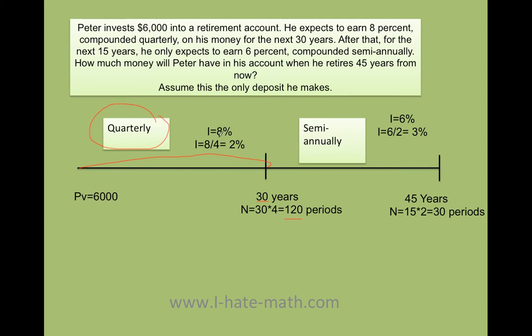Remember, the interest is not 8% — he's going to be using 8 divided by 4, which is 2%. He puts the money, which is $6,000, and waits all the way to 30 years. After that, his future value is actually going to become his present value, because now that we are at 30 years, there's only 15 years left.